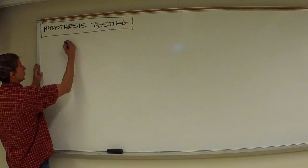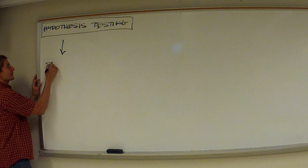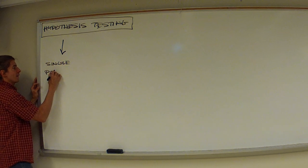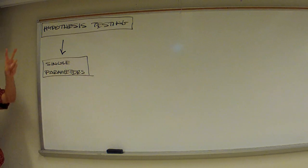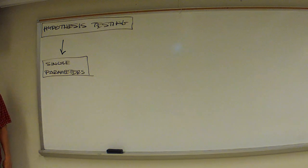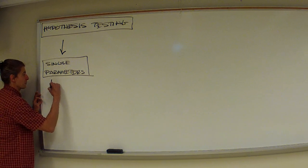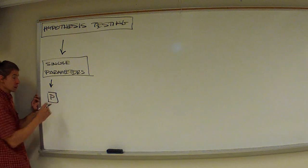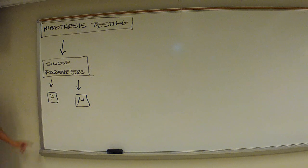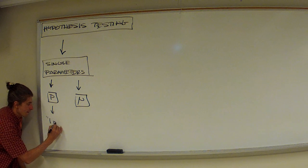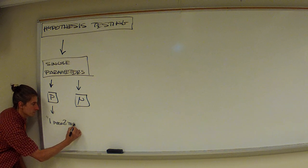Where we started this whole journey was we were testing single parameters. There were two tests that we did because there were two parameters we care about. What are those two parameters? Proportion and average. We care about a little proportion, little p, or population proportion. And we care about the population average, little mu. Those guys had clever little names.